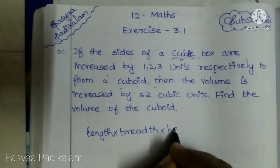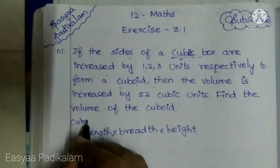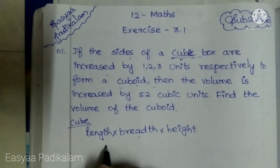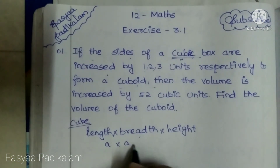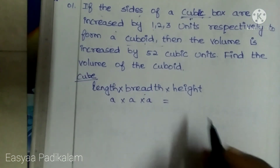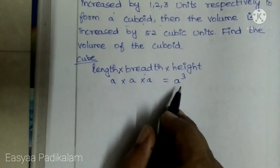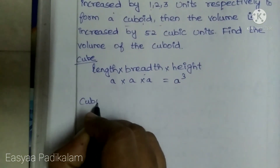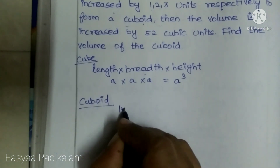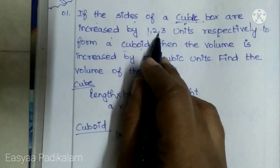So, for a cube, volume equals length into breadth into height. For a cube, all sides are equal. For a cuboid, the formula is also length into breadth into height, but the only difference is that we increase by 1, 2, 3.